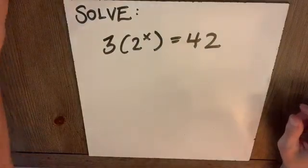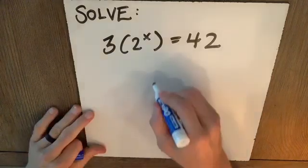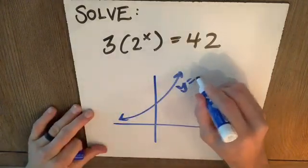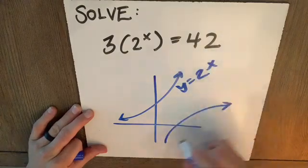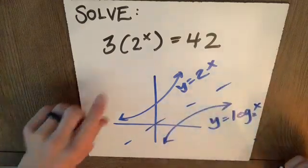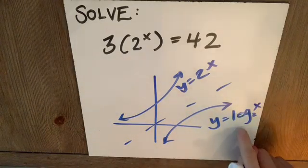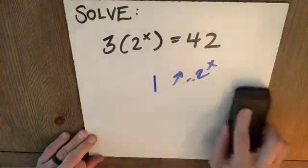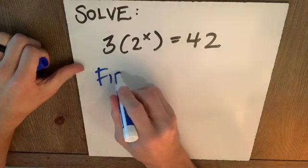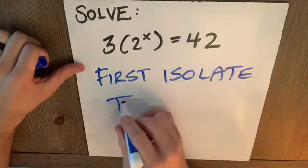If we're asked to solve this equation, 3 times 2 to the x equals 42, notice 2 to the x is an exponential. How do I want to solve that? With y equals log base 2 of x. In other words, if I recognize this is an exponential, I want to use logs to solve it. But as I've tried to stress many times, we first, I'll write it out, first isolate the exponential.